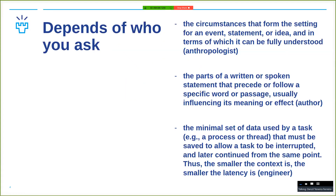There's no right answer — it depends on who you ask. If you think about an anthropologist, they will say it's about everything that goes around an event, statement, or idea in terms that it can be fully understood. If you ask an author, it's basically what has been said before or after a specific passage in a book. And if you ask an engineer, it's basically data — a minimum set of data that can be used by a task, allowing you to resume that task if it gets interrupted.